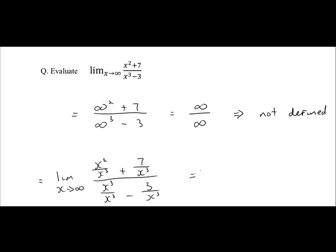At this point we break it down. x squared divided by x cubed is 1 over x plus 7 over x cubed. x cubed divided by x cubed is 1 minus 3 over x cubed.